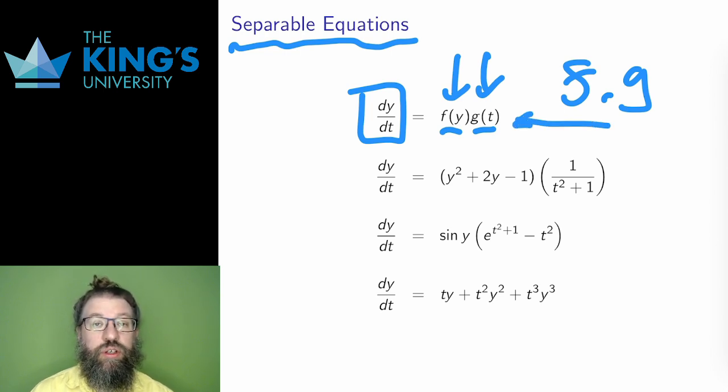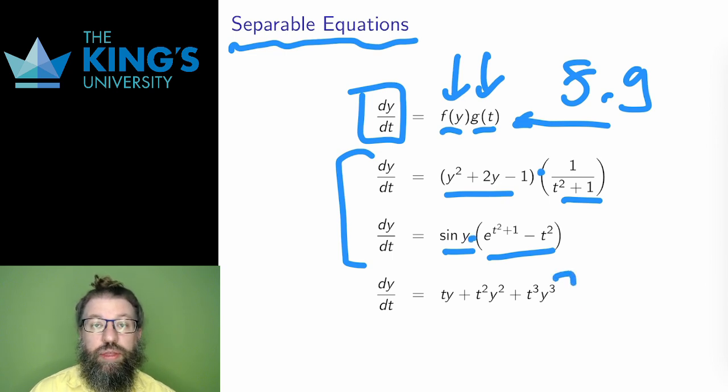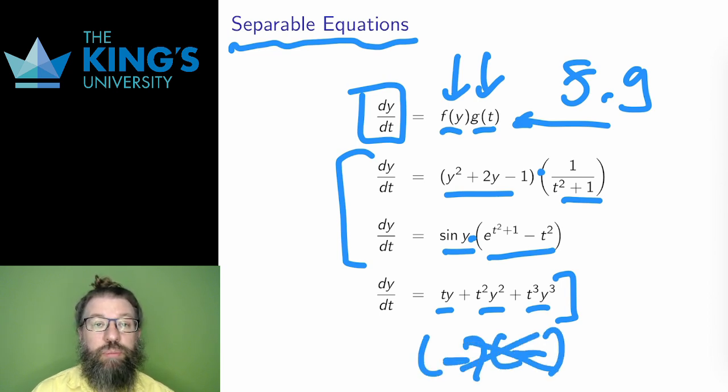These two equations here are separable. The y piece and the t piece are in two different expressions, and those expressions are multiplied together. The last equation here is not separable. There are products of t's and y's, but there is no single group for y or a single group for t whose product together makes the right side. The addition of these mixed terms means that this cannot be separated.